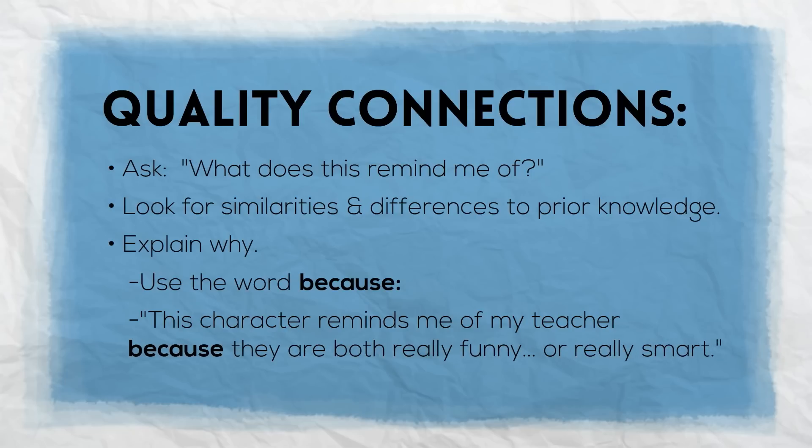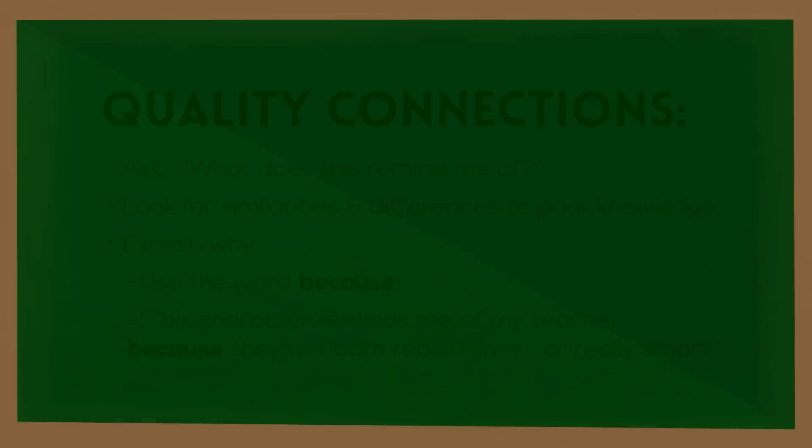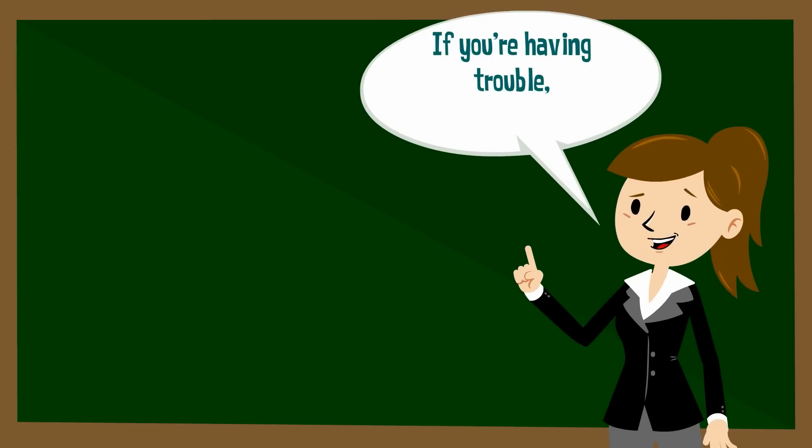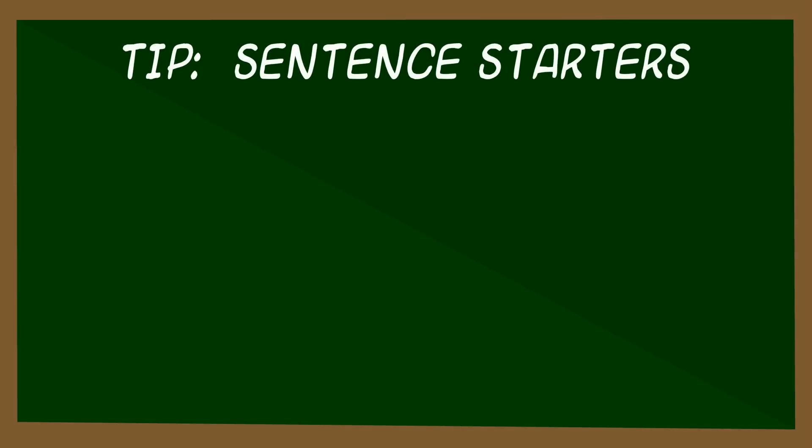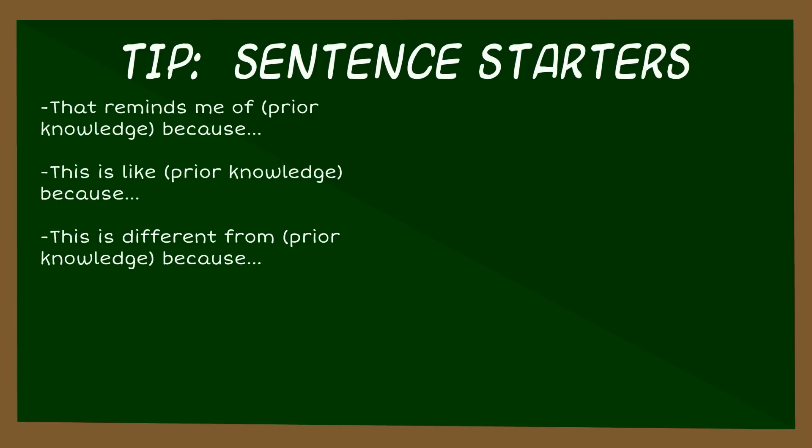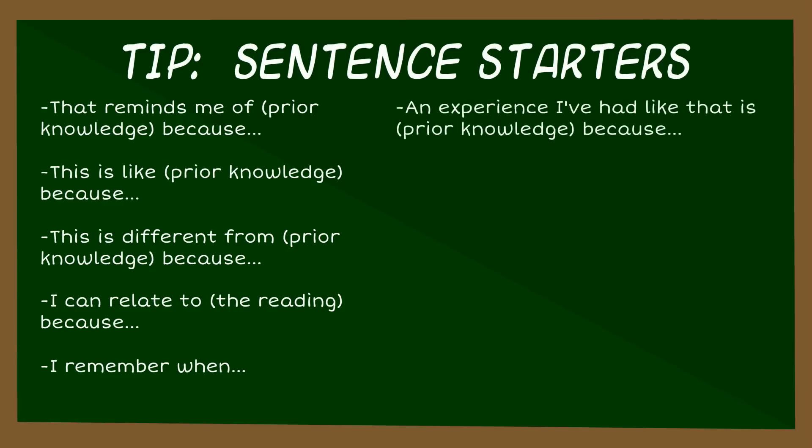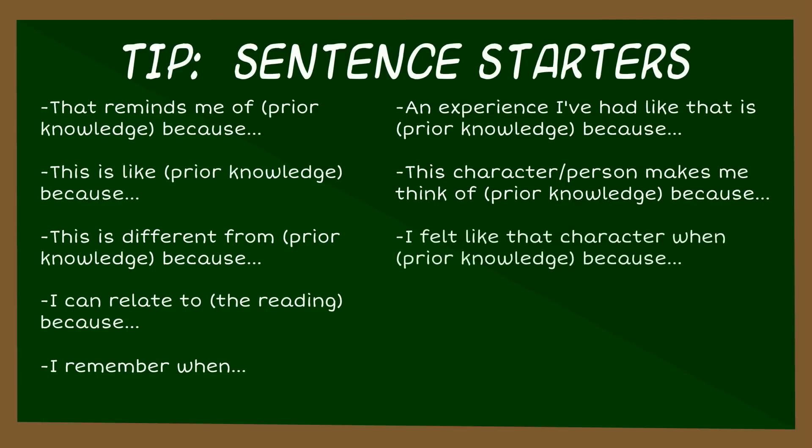In the beginning, though, if you're having trouble making connections, you might need to train your brain how to connect. So here are some sentence starters that can help get you started: 'That reminds me of... because,' 'This is like... because,' 'This is different from... because,' 'I can relate to... because,' 'I remember when,' 'An experience I've had like that is... because,' 'This character or person makes me think of... because,' 'I felt like that character when... because,' 'I know this happens in the world when,' 'This setting or event or situation is similar to... because.'